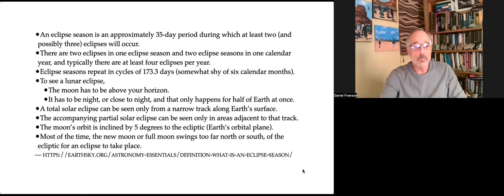The accompanying partial solar eclipse can only be seen in the areas adjacent to that pathway. The moon's orbit is inclined five degrees to the ecliptic, which is the Earth's orbital plane. Most of the time, the new moon or full moon swings too far north or south of the Earth's equator for an eclipse to take place. It has to be within a certain range.